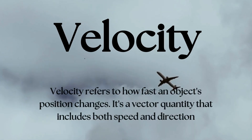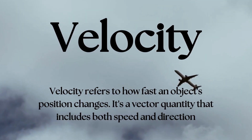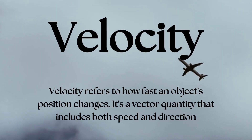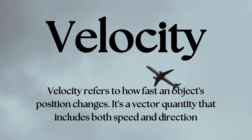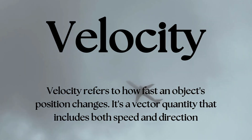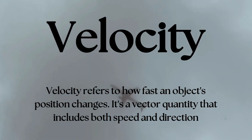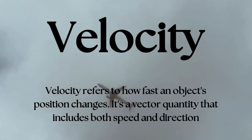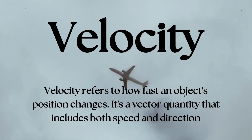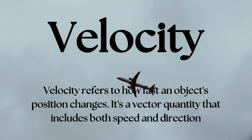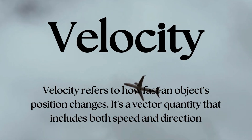When we talk about how fast an object's position changes, we use the term velocity. It's a vector quantity that includes both speed and direction. Velocity.